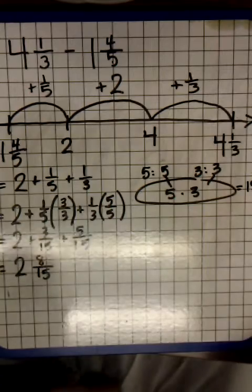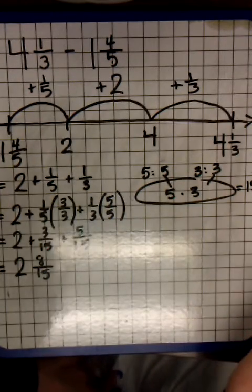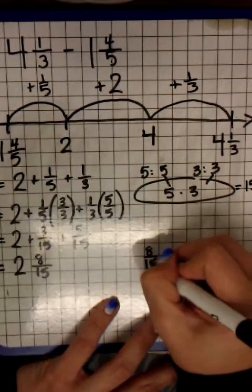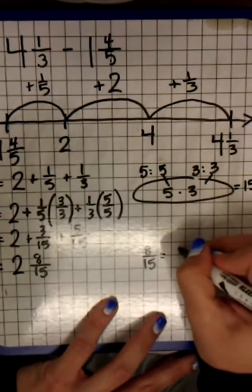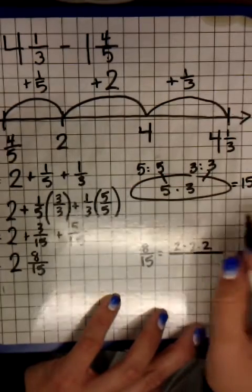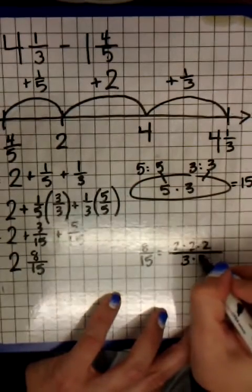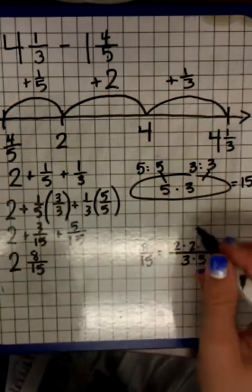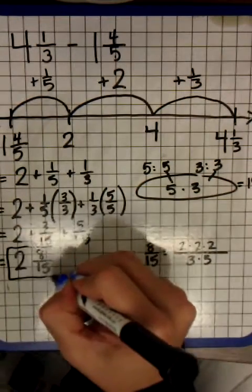I always tell the students to make sure it can't be simplified, and to use prime factorization. Prime factors of eight are two times two times two. If I didn't know that, I would do factor trees. For fifteen it's three times five. So there's no factors in common, which means this is simplified, and this is the answer.